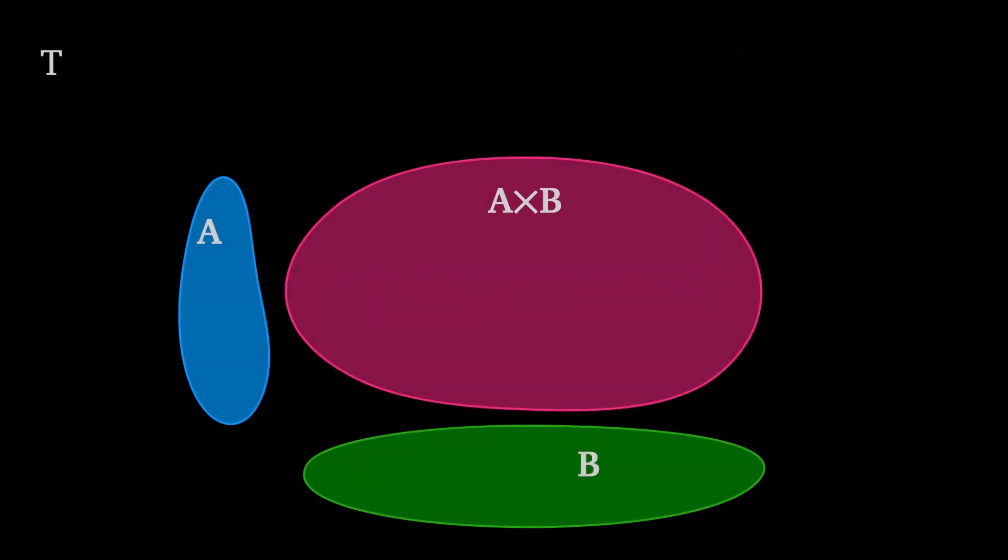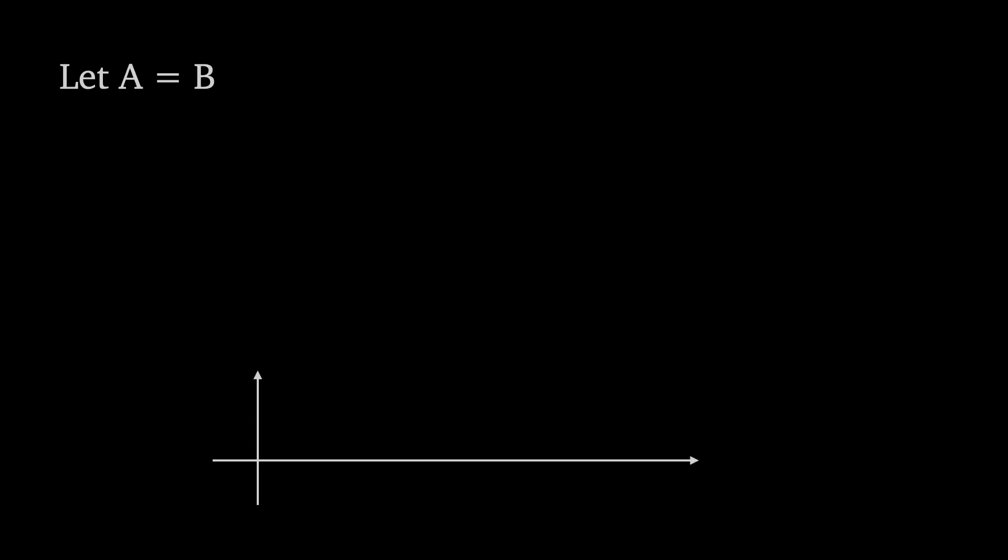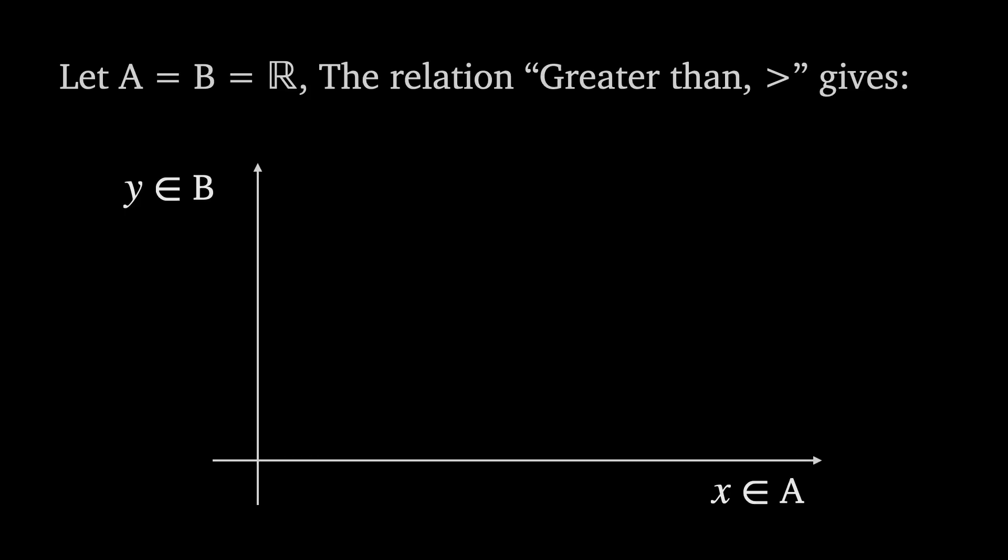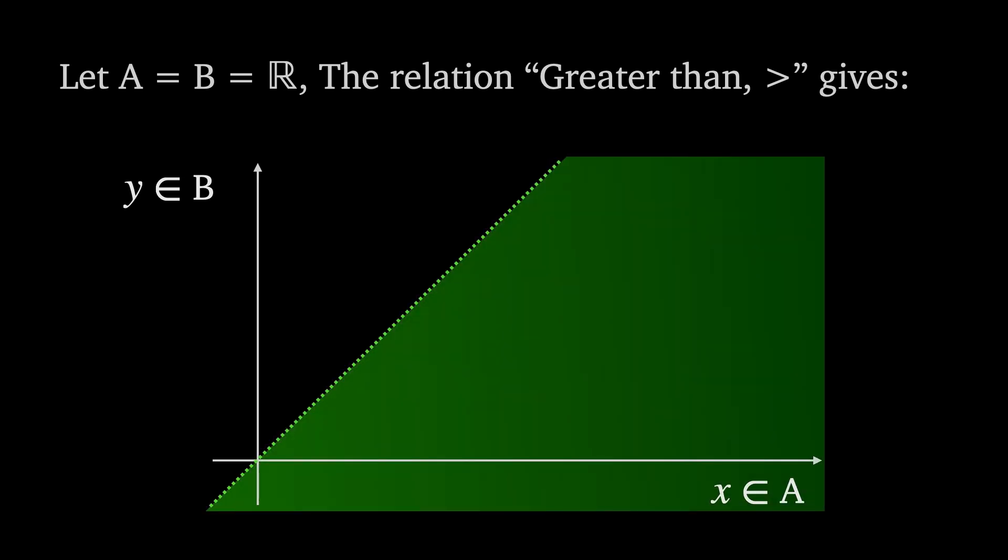For example, the relation greater than applied to sets a and b gives a set of all ordered pairs x and y in a cross b such that x is greater than y. If we let a and b be the set of real numbers, then the relation greater than gives the region of the xy plane where x is greater than y. This is the region below the line y equals x.